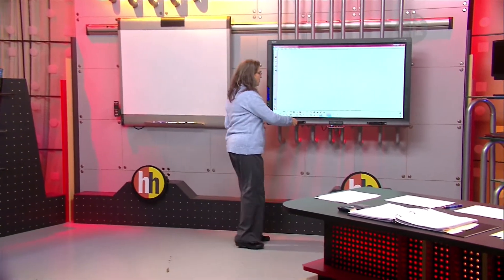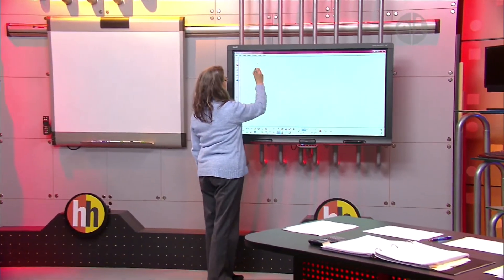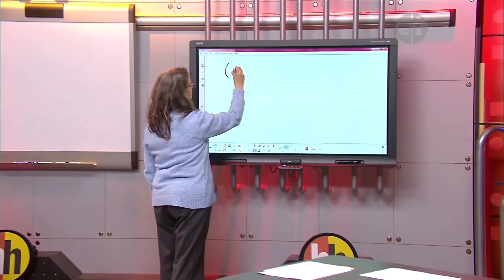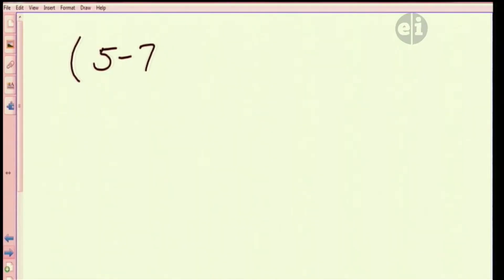The problem was, parentheses, 5 minus 7, close the parentheses, subtract 6 plus 7, divided by 3.